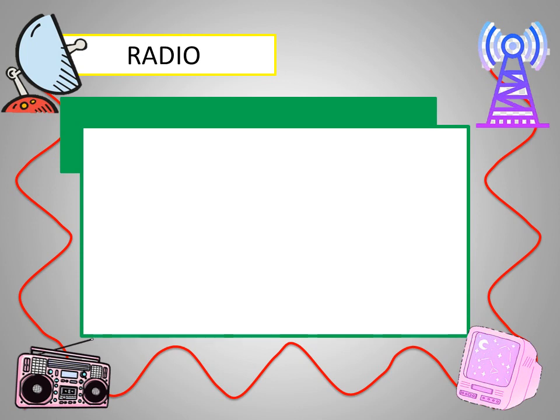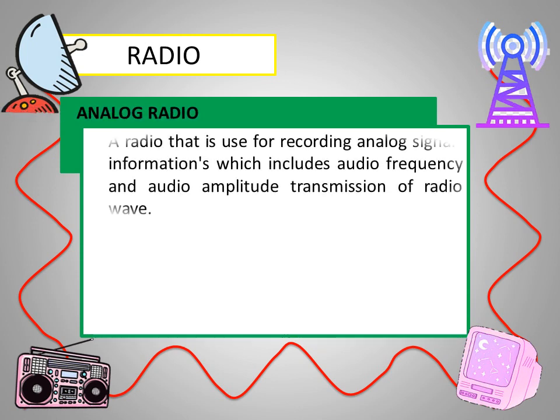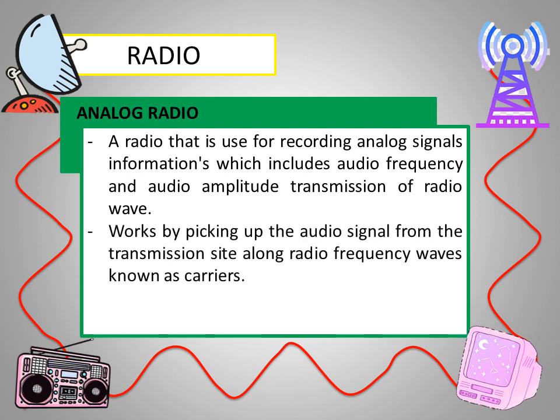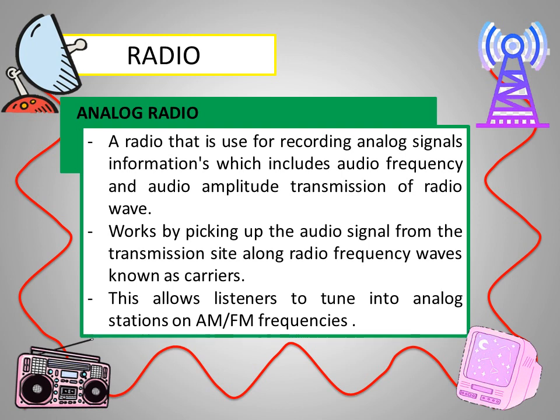What is analog radio? It is a radio used for recording analog signal information, which includes audio frequency and audio amplitude transmission of radio waves. It works by picking up the audio signals from the transmission site along radio frequency waves, known as carriers. This allows listeners to tune into analog stations on AM and FM frequencies.